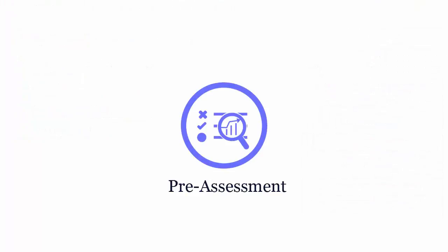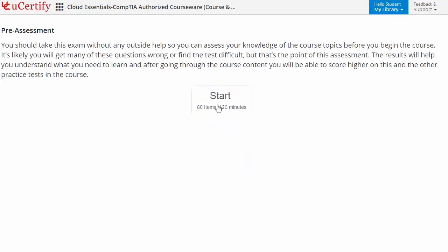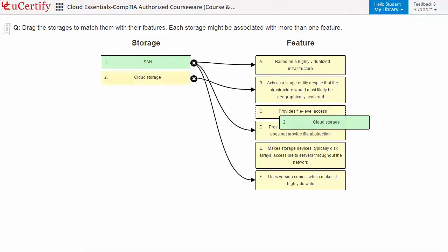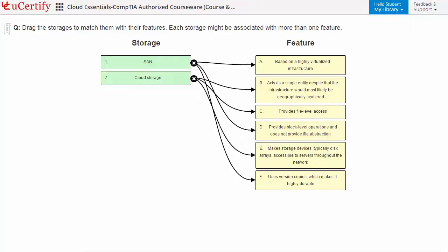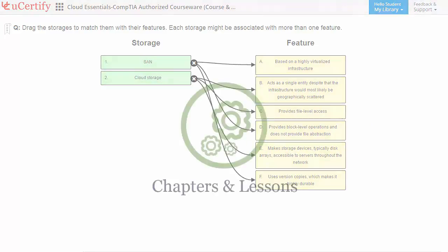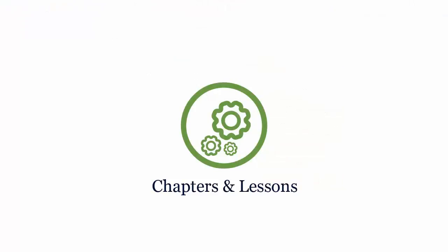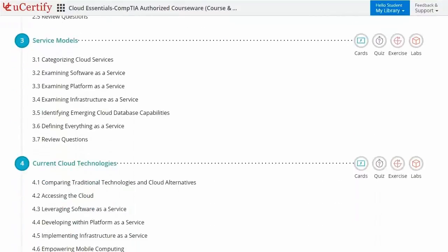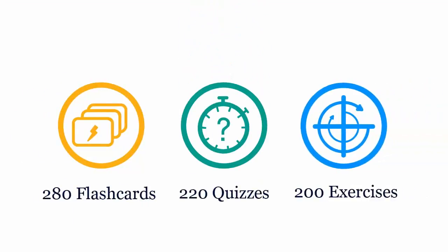Pre-assessment lets you identify the areas for improvement before you start your prep. Like here, you need to match the storage with their features. Interactive chapters and lessons comprehensively cover CompTIA Cloud Essentials certification exam objectives. It includes 12 lessons with interactive learning resources such as over 280 flashcards, 220 quizzes, and 200 exercises.